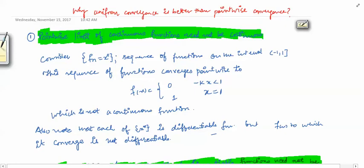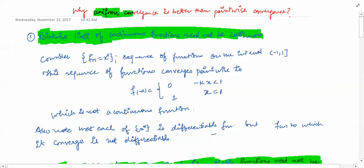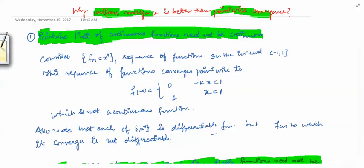Welcome to this next video on measure theory. In the last video we saw pointwise and uniform convergence. In the current video we will see why uniform convergence is better than pointwise convergence, by looking at some of the drawbacks of pointwise convergence.